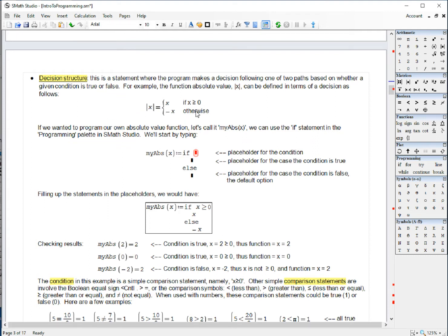If we wanted to define a piecewise function like, for example, the absolute value function, that absolute value function can be defined as absolute value of x is equal to x if x is greater than or equal to zero, or minus x otherwise.